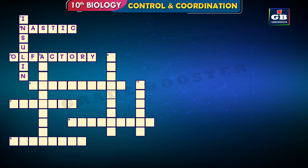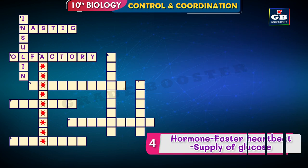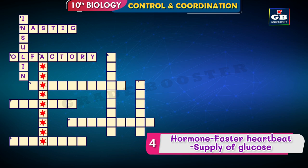Four down — let's see the hints: hormone, faster heartbeat, supply of glucose. There are three hints here: it is a hormone, faster heartbeat, supply of glucose.